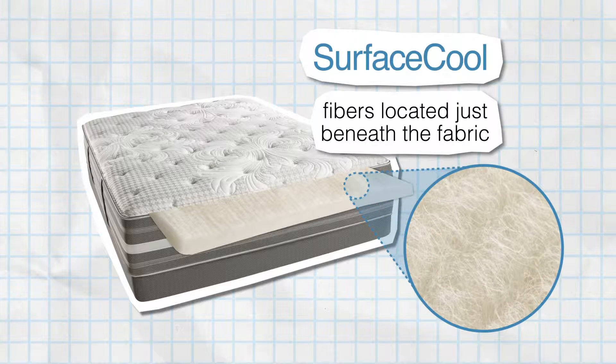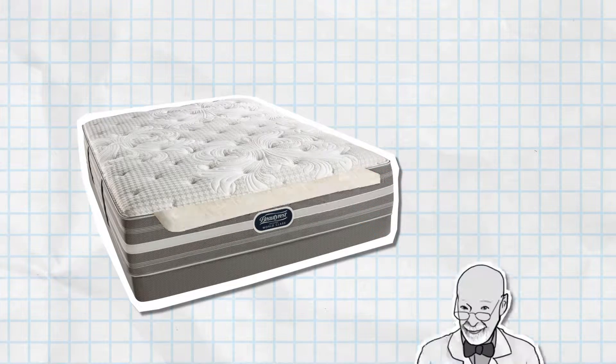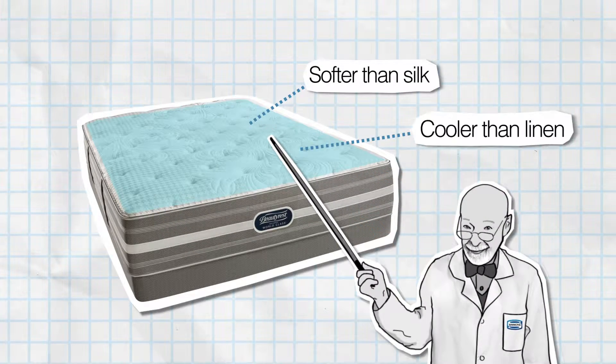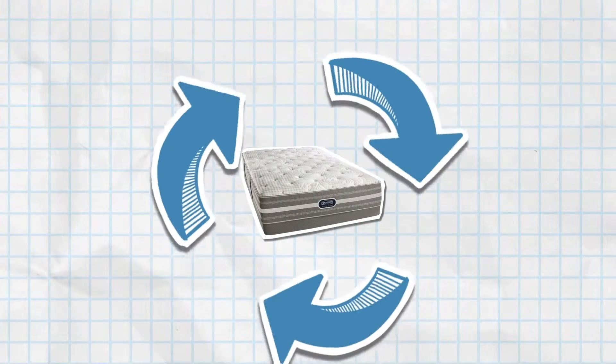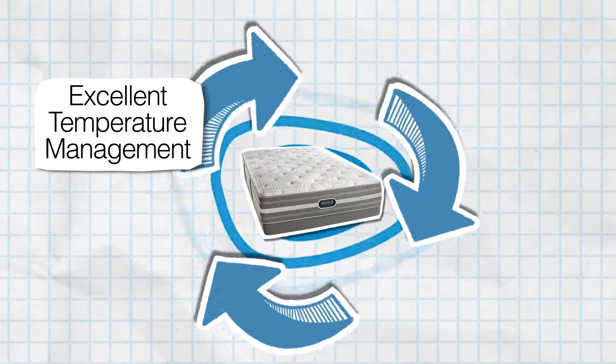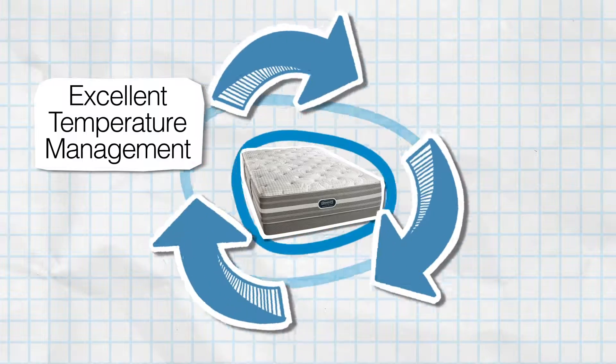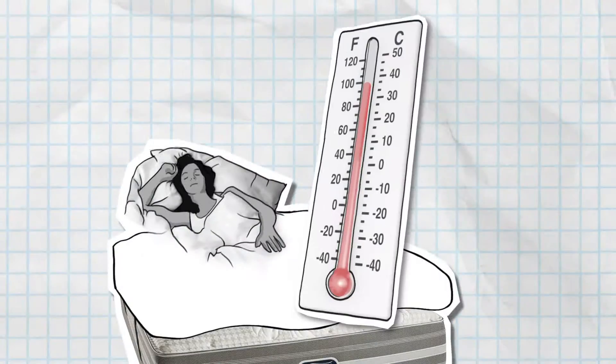Surface Cool Fiber is a layer of fiber located just beneath the top panel of fabric. It's softer than silk, cooler than linen, and is designed to provide excellent temperature management. Temperature management aids your body in thermal regulation.